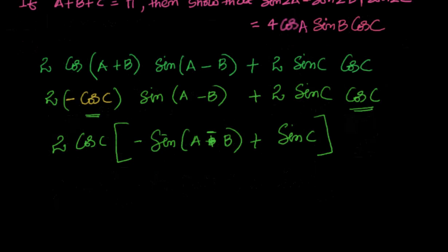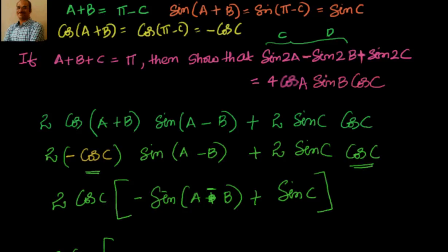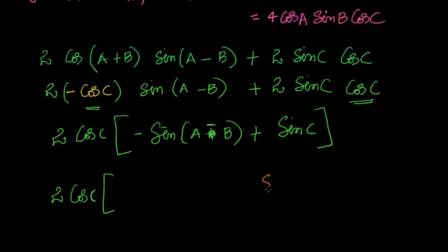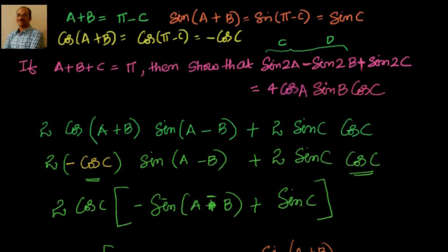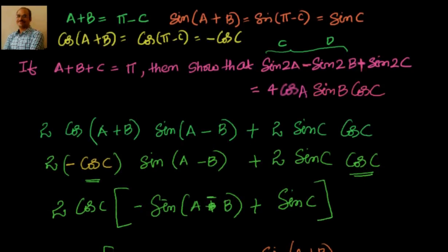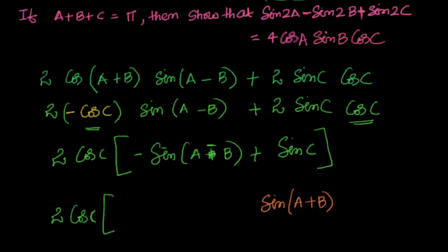I hope you are with me till now. We have 2cosC into [−sin(a−b) + sinC]. Now, sinC is nothing but equal to sin(a+b). So instead of sinC I write sin(a+b), keeping the same color so you can trace back how each substitution was made — yellow terms come from yellow, orange terms from orange.